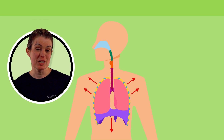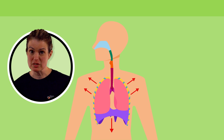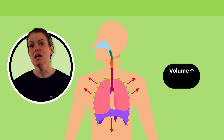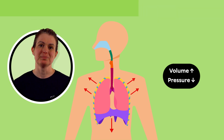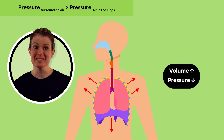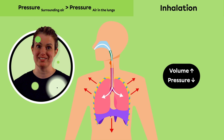Since the contraction of the respiratory muscles increases the volume of the chest cavity, the pressure in the lungs decreases. When the pressure of the surrounding air is higher than the pressure in the lungs, air enters the airways to reach the lungs. This is called an inhalation.